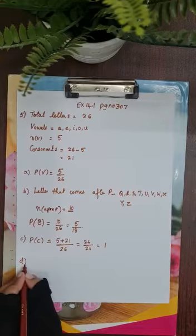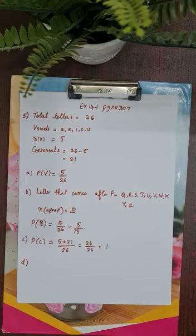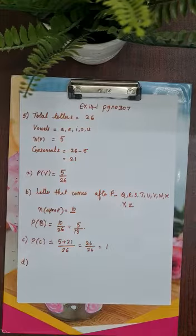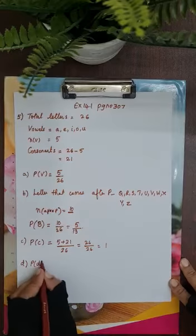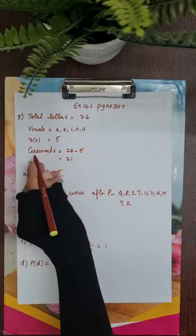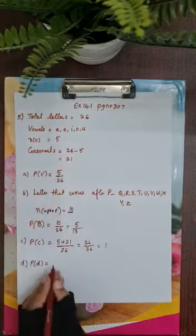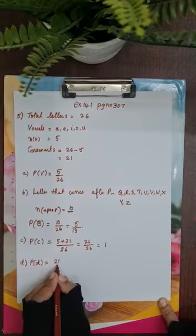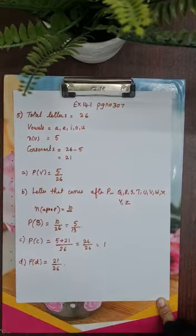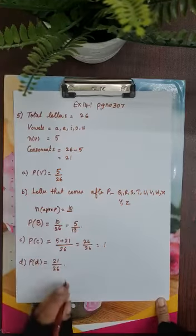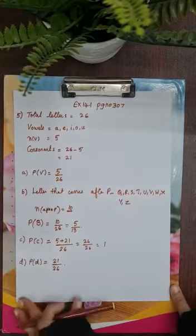Part D: not a vowel. What is the probability of getting a letter that is not a vowel? If it is not a vowel, then it is a consonant, and we have 21 consonants. So the probability of getting not a vowel is 21 by 26. Please read the question, refer the PDF, watch the video, and then complete your work.